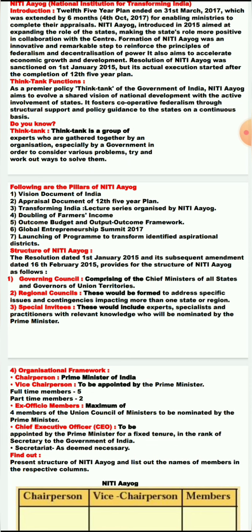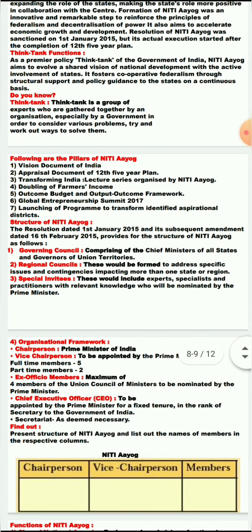The next policy of Niti Ayog was the launching of programs to transform identified aspirational districts. Whatever programs or policies are framed by the government or Niti Ayog will be identified and implemented in all districts. For example, during the COVID-19 pandemic period, the central and state governments discussed together and made rules about which city or district would be under green zone, red zone, or alert — and each district and taluka was strictly instructed to follow this policy. This is the launching of programs to transform identified aspirational districts.